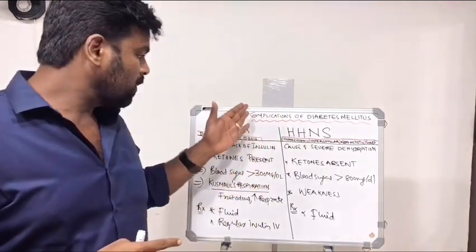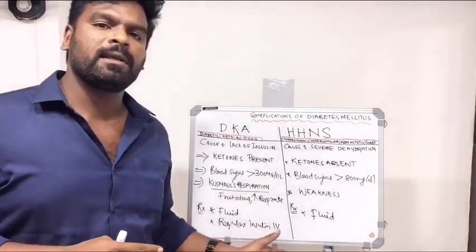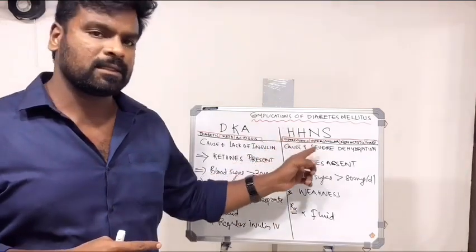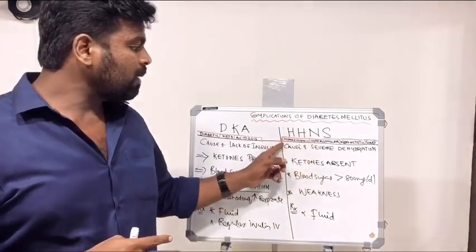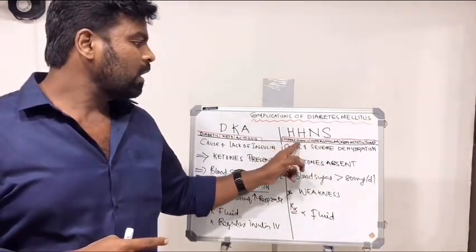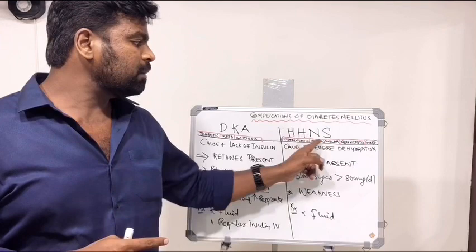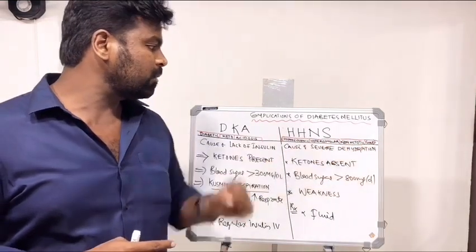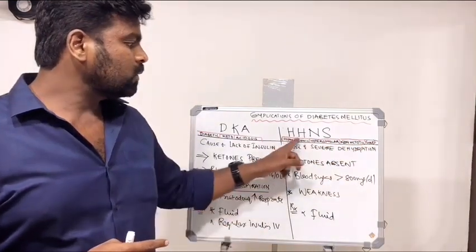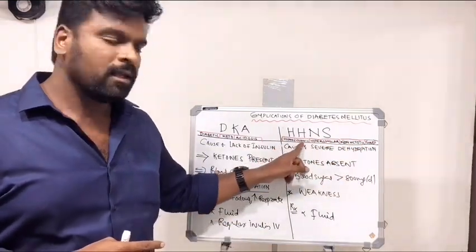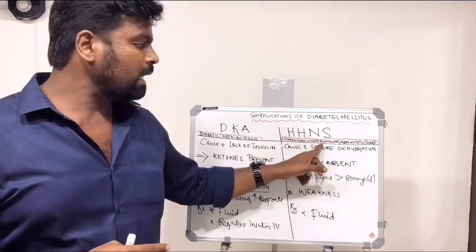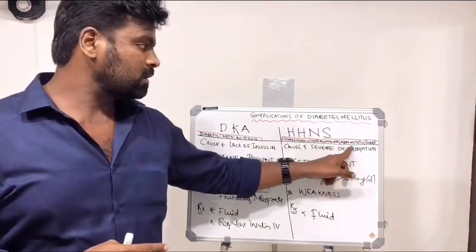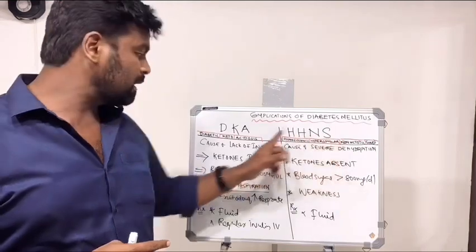This is all about diabetic ketoacidosis. Now let me deal with HHNS — Hyperglycemic Hyperosmolar Non-Ketotic Syndrome. From the name itself: sugar is very high, urine osmolarity is high, and there are no ketone bodies. That is the main specialty of HHNS.